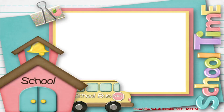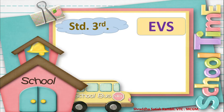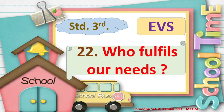Here I am back with a lesson in Standard 3rd EVS and we will be continuing the lesson that we were doing last time. Can you remember which lesson we were doing last time? Yes, it was lesson number 22, Who Fulfils Our Needs. Today we will be doing part 2 of this lesson. Let us quickly look at some pictures where we will revise what we learnt last time, and then we will go on and see some new points in this lesson.